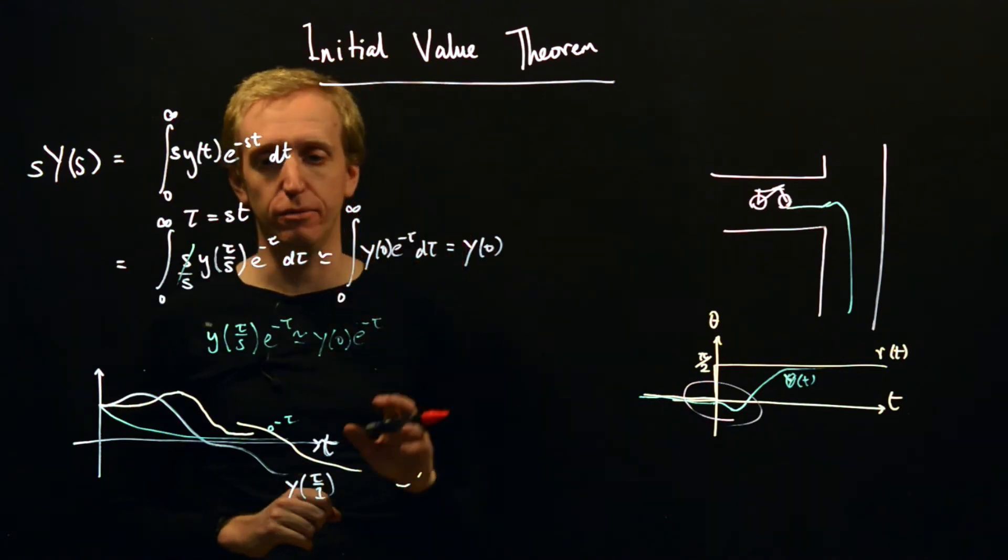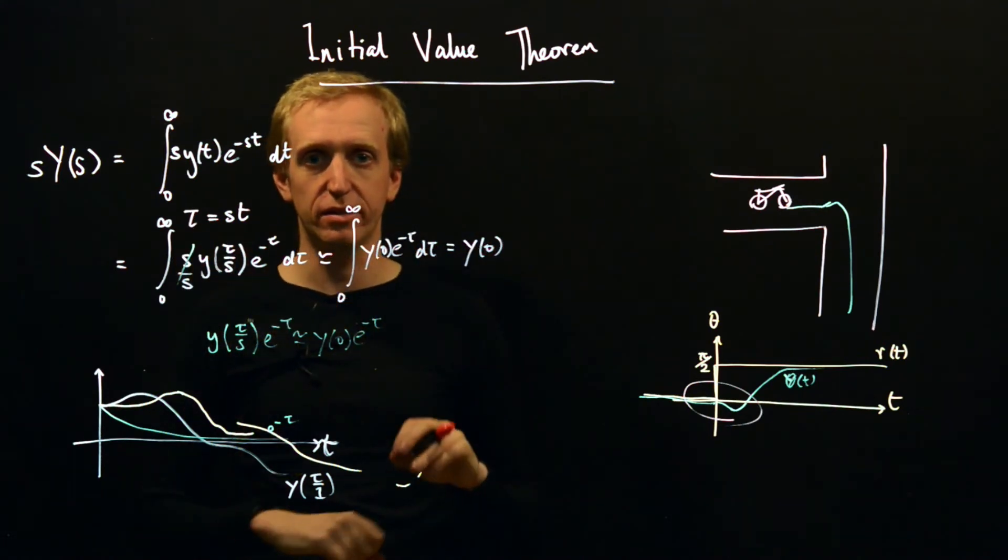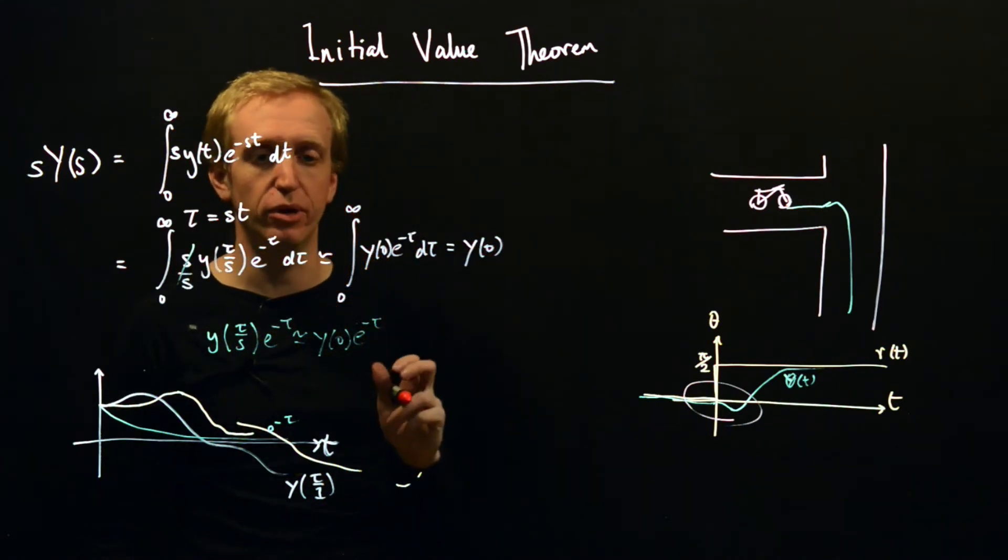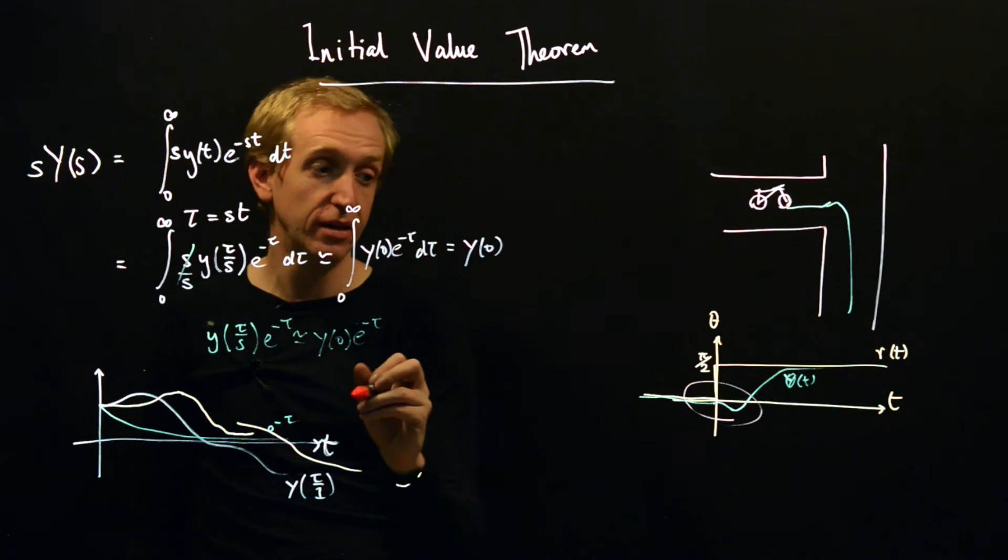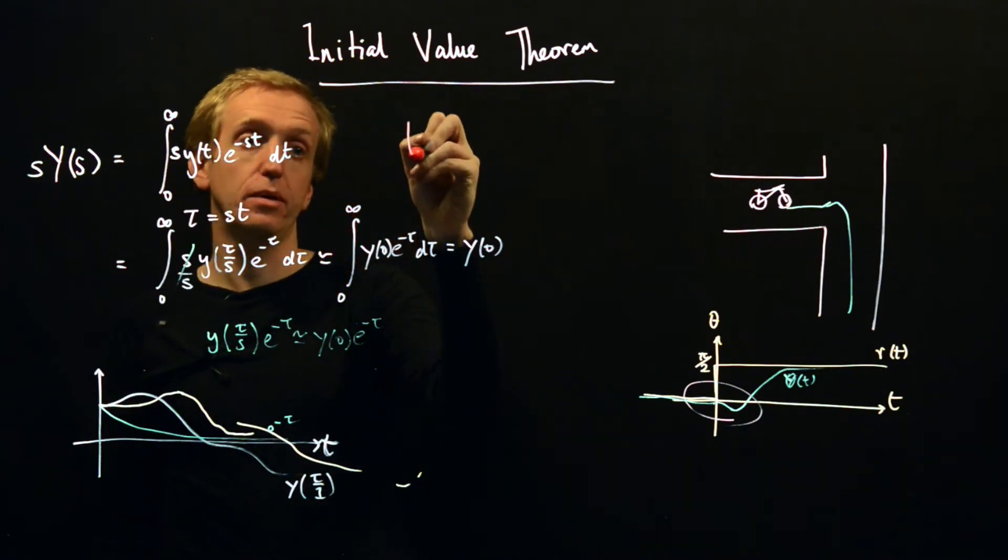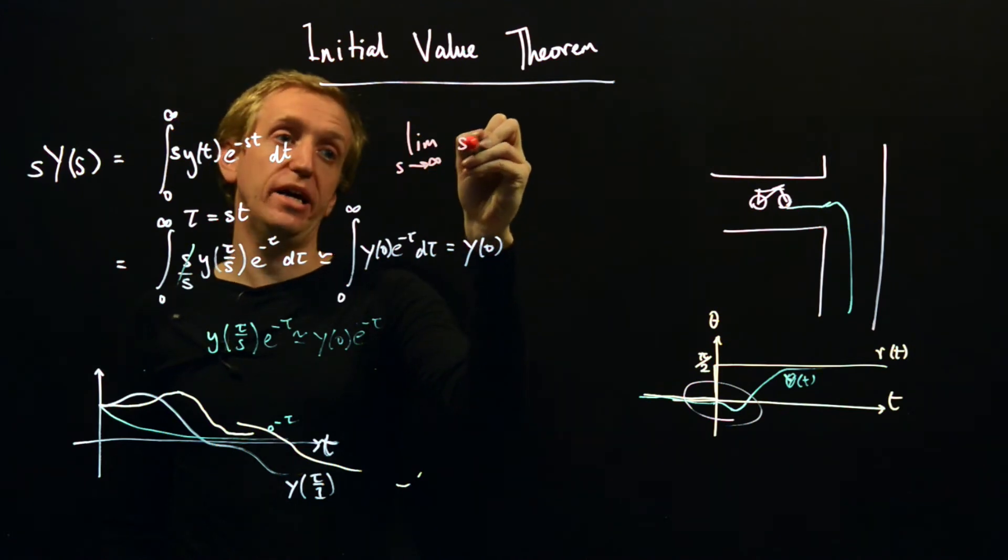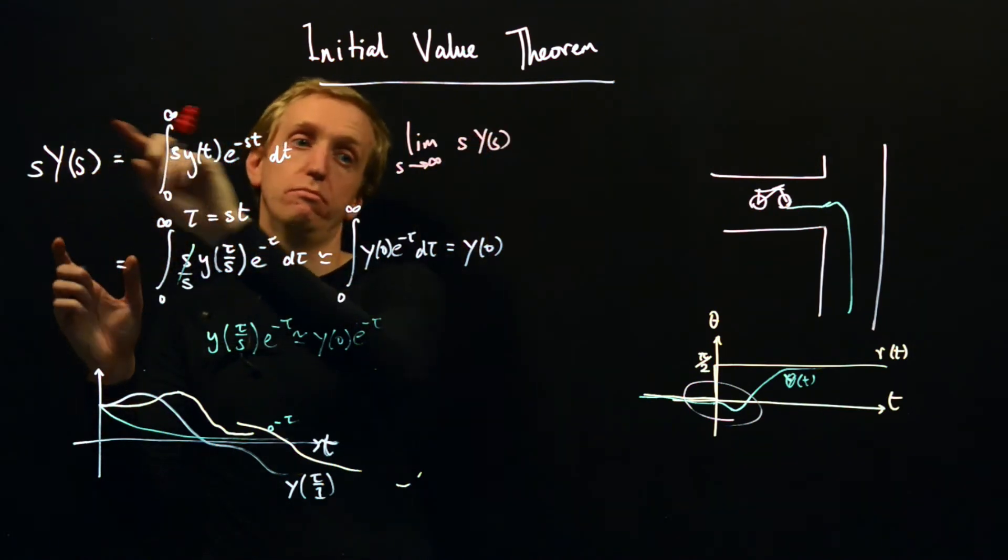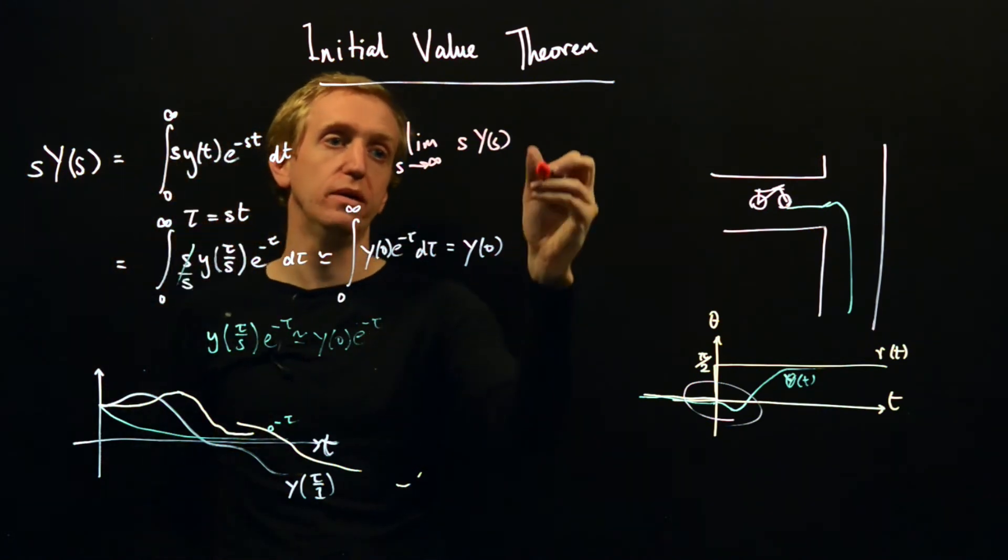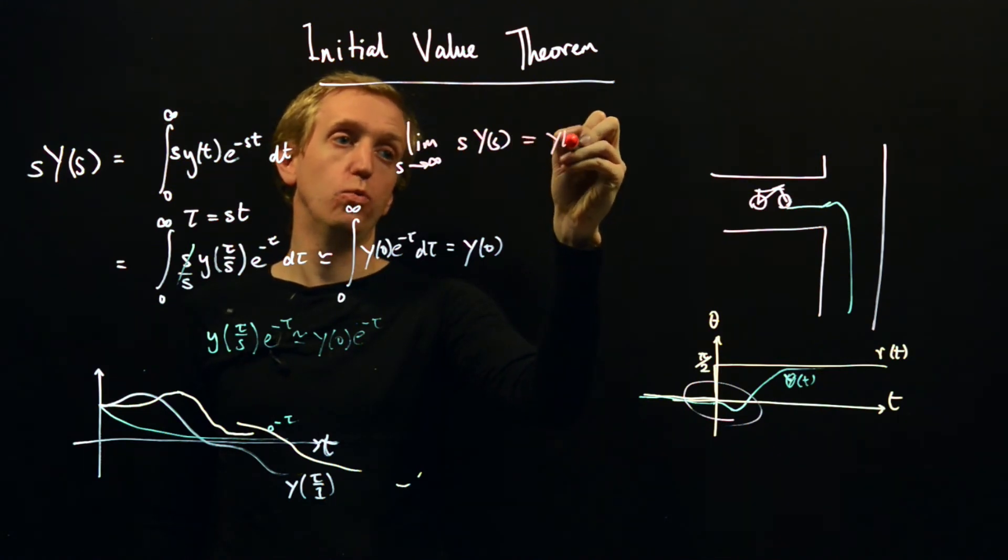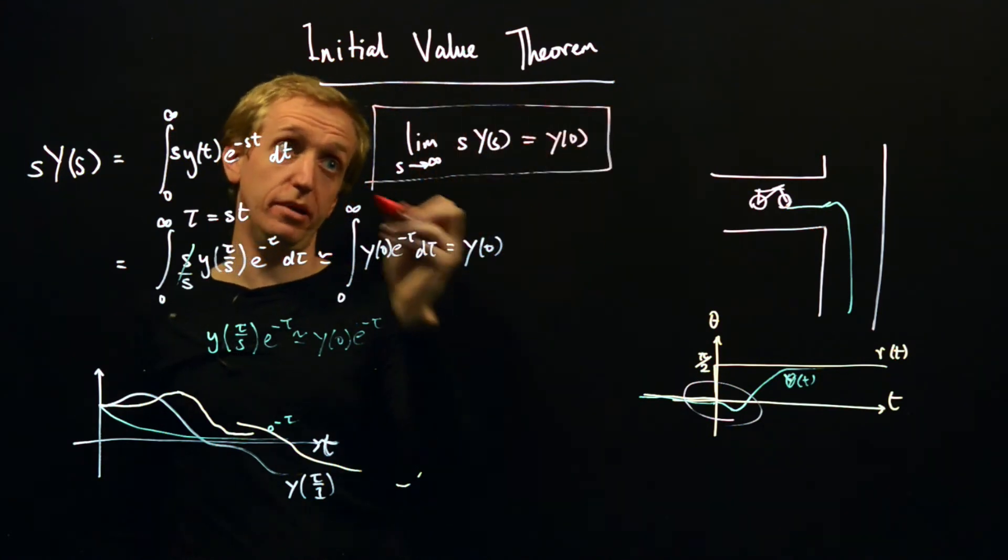You can make this argument rigorous just by splitting this integral into two pieces and I'll give you a link or you can try and do it yourself. But what we've shown at the end of all of this is that the limit as s goes to infinity of s·Y(s) is equal to y(0). And this thing here, this is the initial value theorem.